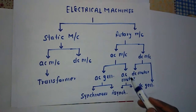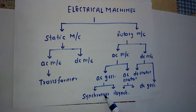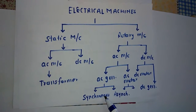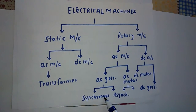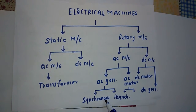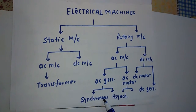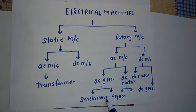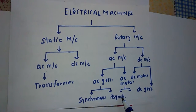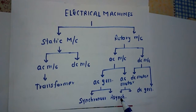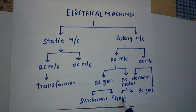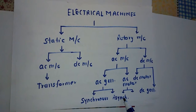AC motors again have the classification of synchronous motor and asynchronous motor. A synchronous motor always has a fixed or constant frequency and constant speed output. An asynchronous motor is also called an induction motor, in which the rotor speed is not exactly equal to the stator speed.